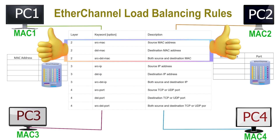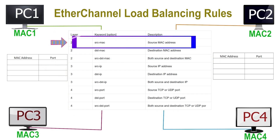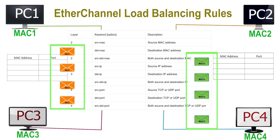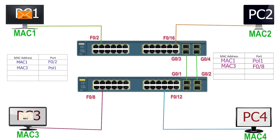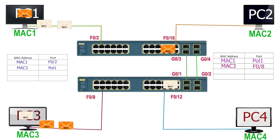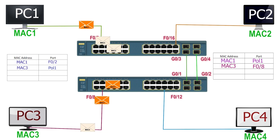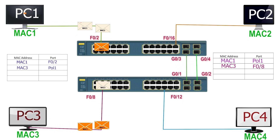EtherChannel uses load balancing rules to decide which physical port inside the pool will forward an incoming frame. All switches support MAC-based rules; IP-based rules depend on the model and software version. The default load balancing uses the source MAC addresses of incoming frames to select the forwarding port. Since all frames from a source have the same header field values, the switch forwards them from the same port in the EtherChannel. This ensures all messages in a single application use the same link and prevents the switch from inadvertently reordering messages by sending one over a busy link while immediately sending another over an unused link.